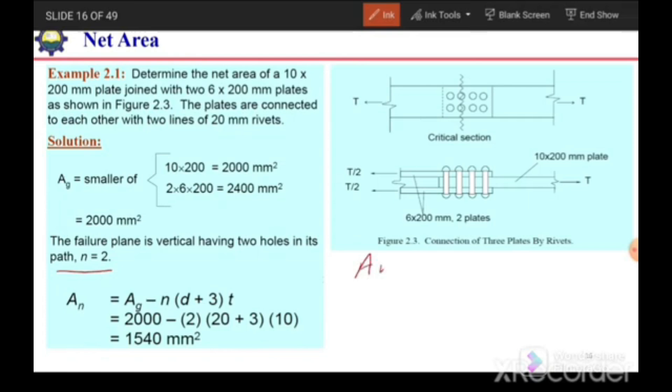To calculate the net area, we can say A_n is equal to A_g minus area of hole. And for the area of hole, or effective area of hole, we have n times (diameter of hole, or we say diameter of bolt plus 3) times thickness. n is the number of bolts which are along that critical section.